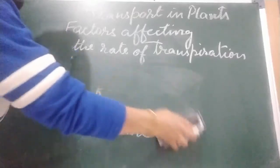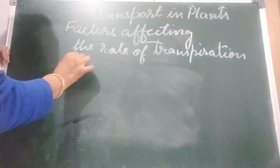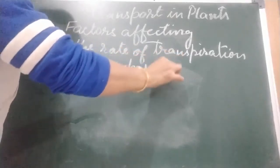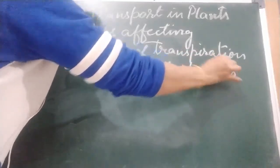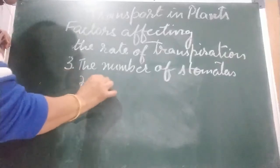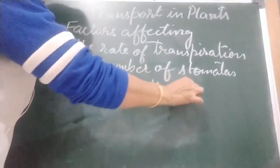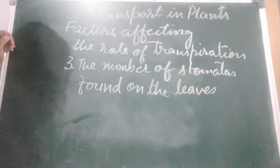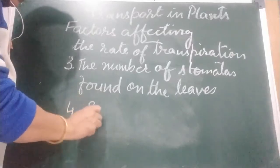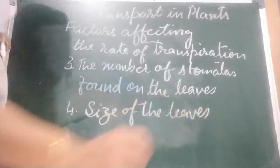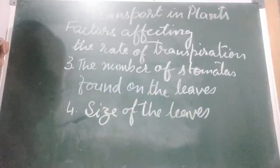Third factor: the number of stomata found on the leaves. If more stomata are there, transpiration is more; if fewer stomata, transpiration is less. More stomata means higher transpiration. Fourth factor: the size of the leaves. If the leaves are bigger, more stomata are present, and therefore transpiration is faster.